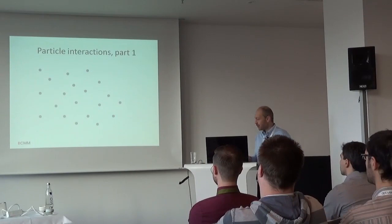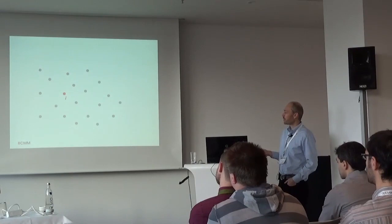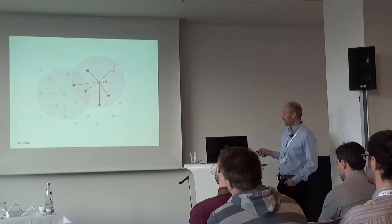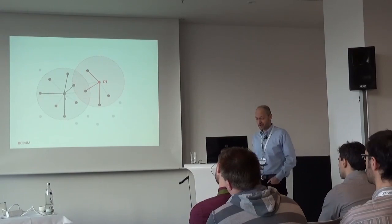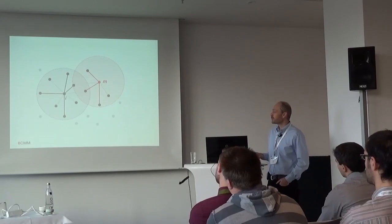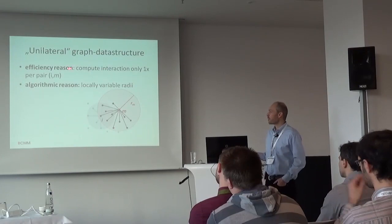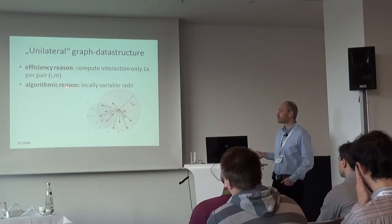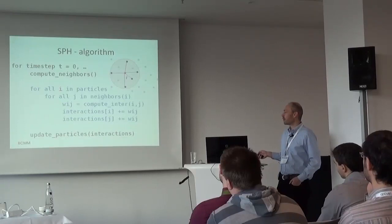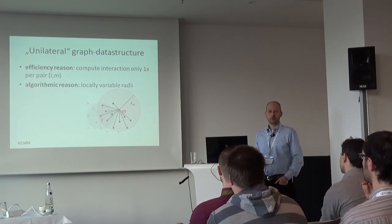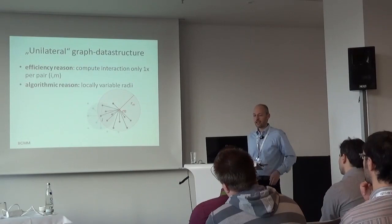Looking at the details of the neighbor computation: each particle I has a radius, and all particles within that circle are its neighbors. We leave out half of the neighbors, resulting in a unilateral neighborhood graph. The reason is twofold: efficiency — since interactions are symmetric you only need to compute them once, saving half the computations — and an algorithmic reason related to local visibility. This leads to interesting dependencies: in the inner loop we update the interactions of particle I but also the interactions of some other particle J at the same step, which means there can be a conflict since that other particle can also be updated from other particles simultaneously. This is a data race.